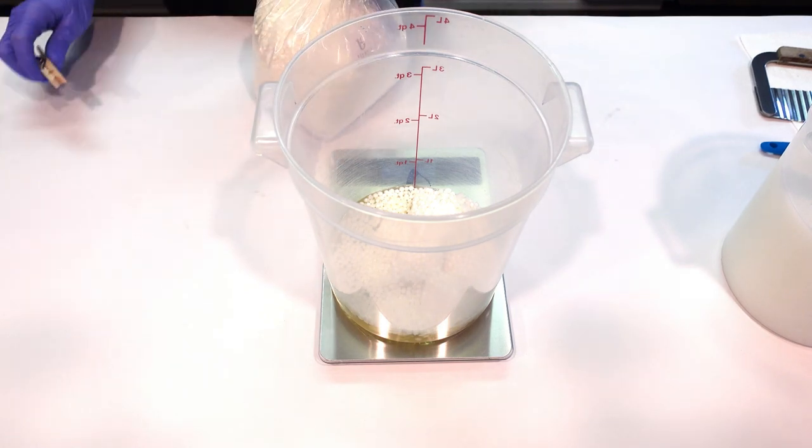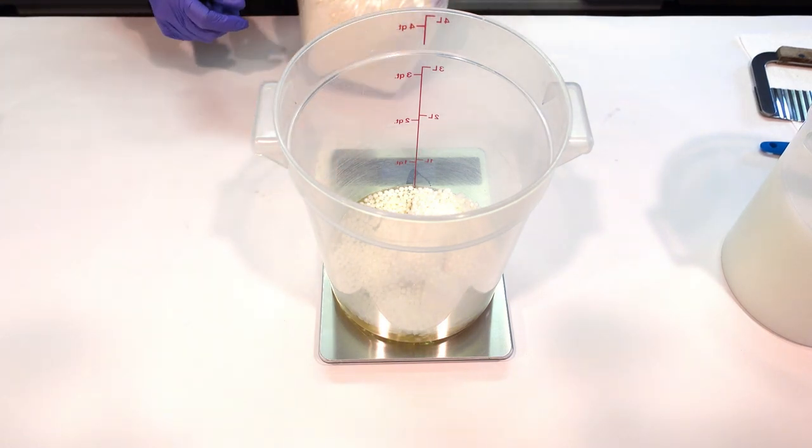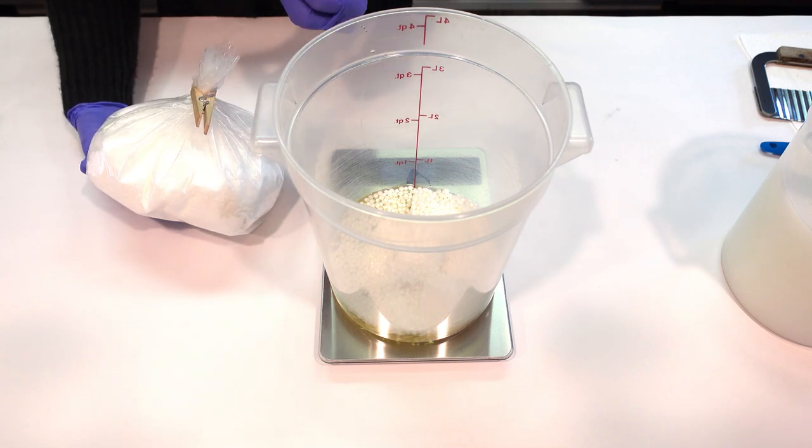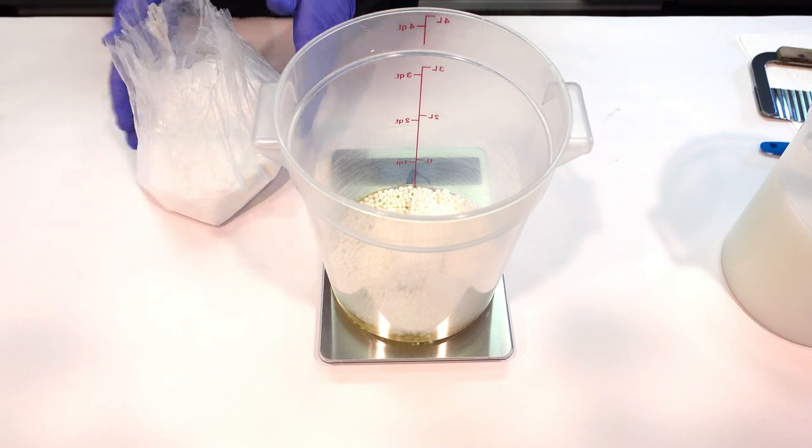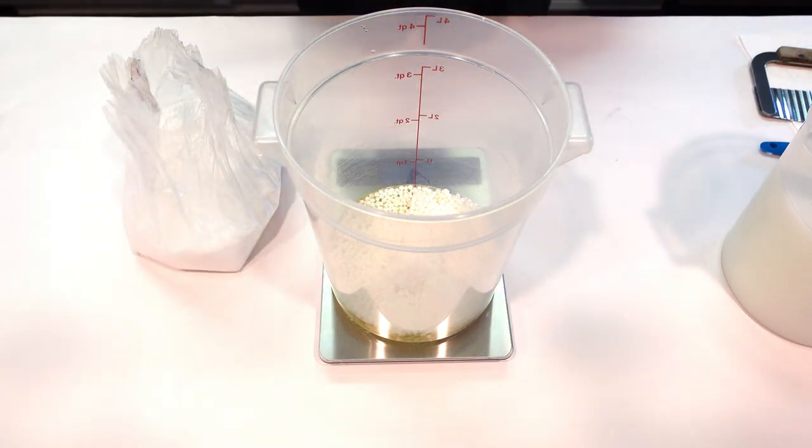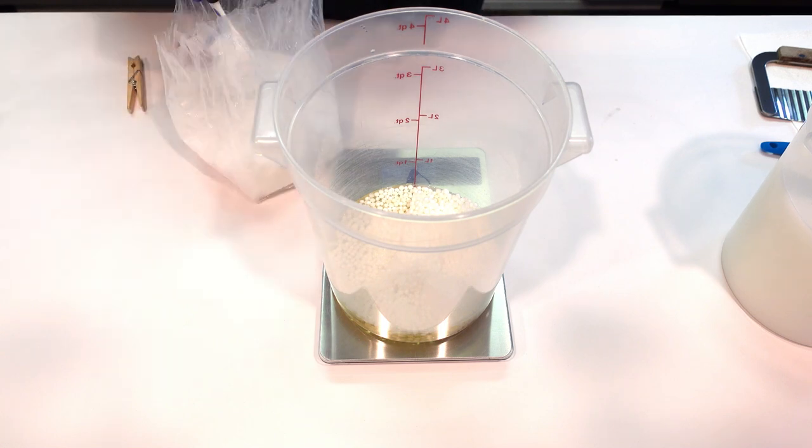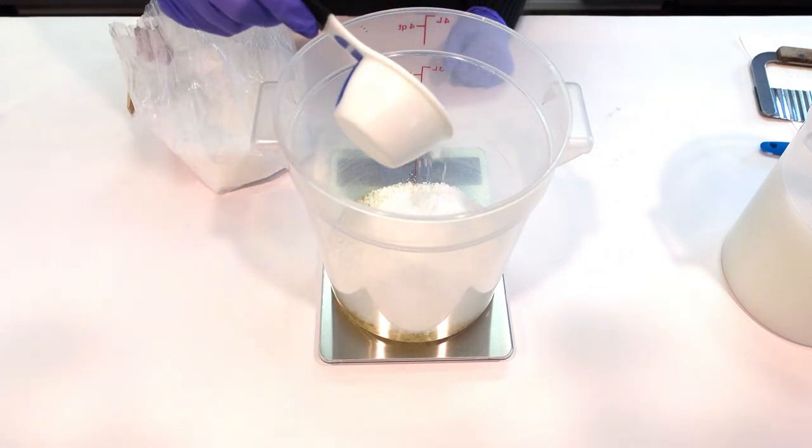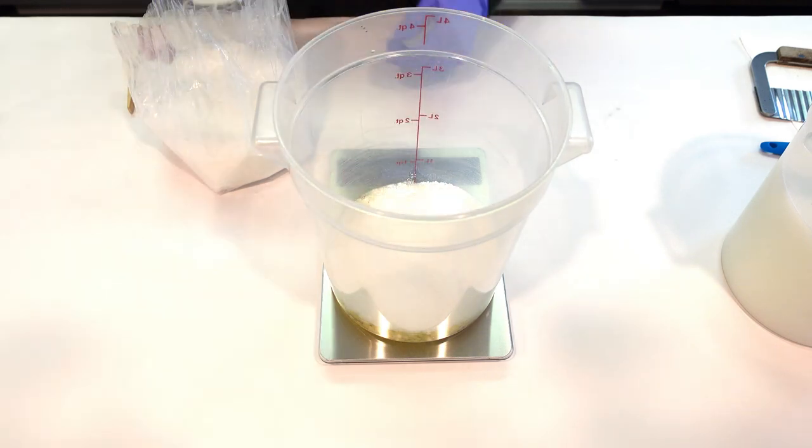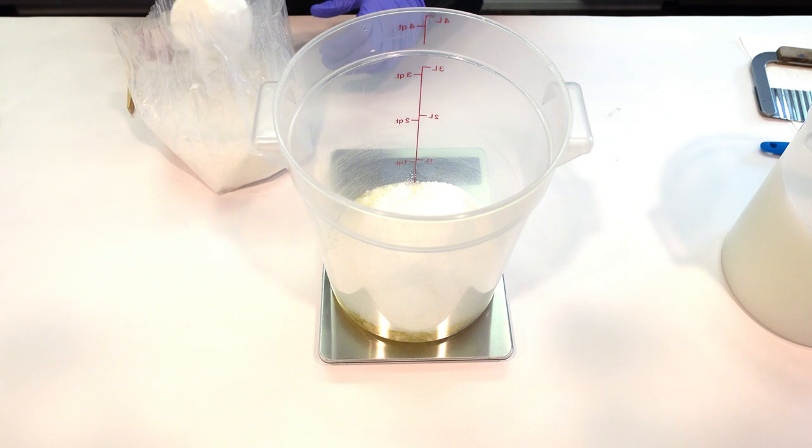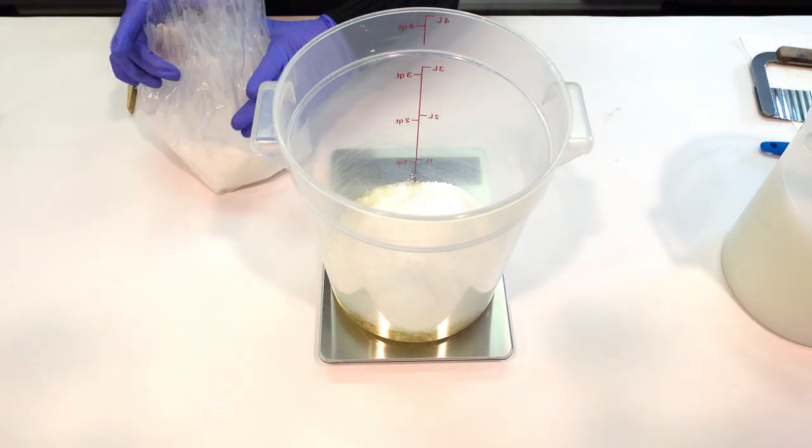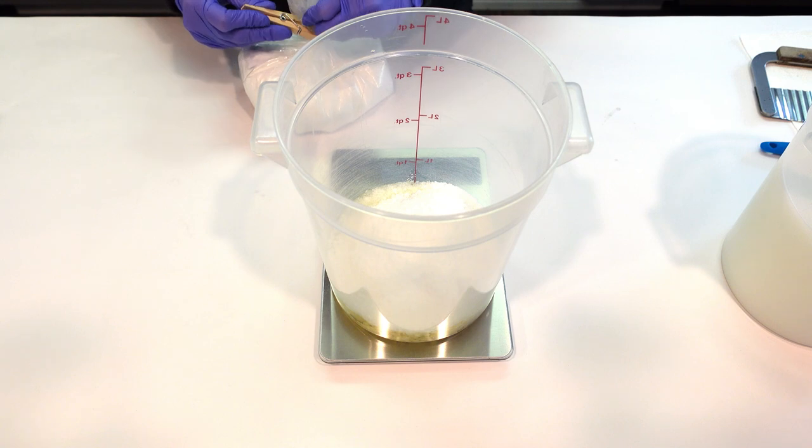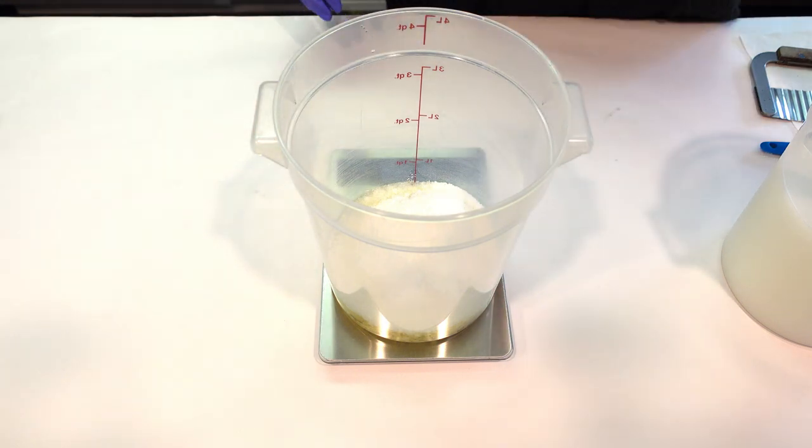Next up, we're going to be adding in some stearic acid. Stearic acid is going to help thicken up this recipe and add some conditioning properties to your formula. It's going to thicken it up to a nice lotion-like consistency. That's it for our oil phase, so I'm going to melt down my two phases - warm up my water phase and melt down my oil phase - and I'll bring you back when we're ready for the next step.